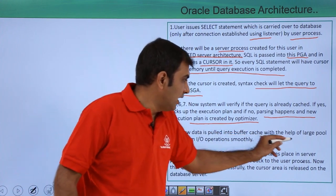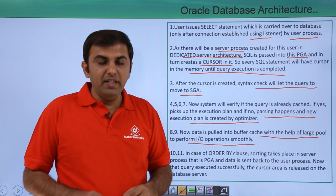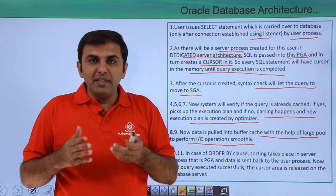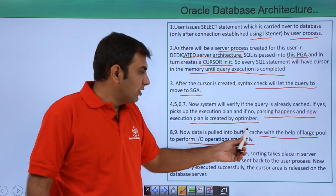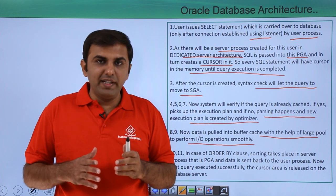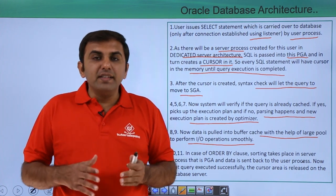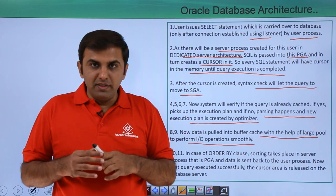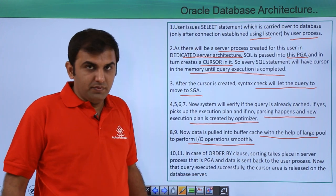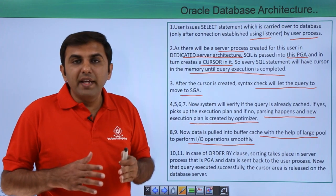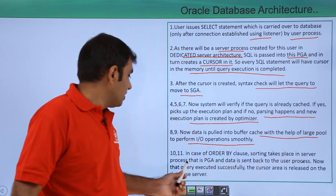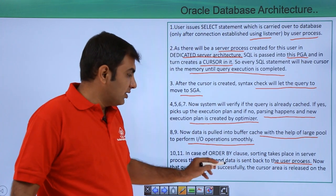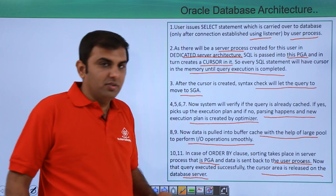The data is pulled into the buffer cache with the help of the large pool to perform I/O operations smoothly. If the data is already in the buffer cache, it is taken from there and given to the user. But if the data is not available in the buffer cache — such as the first time you are executing — the data is taken from the database file. In the case of an ORDER BY clause, like SELECT * FROM employee ORDER BY employee_number, sorting takes place in the server process PGA and data is sent back to the user process. Once the query executes successfully, the cursor area is released on the database server.